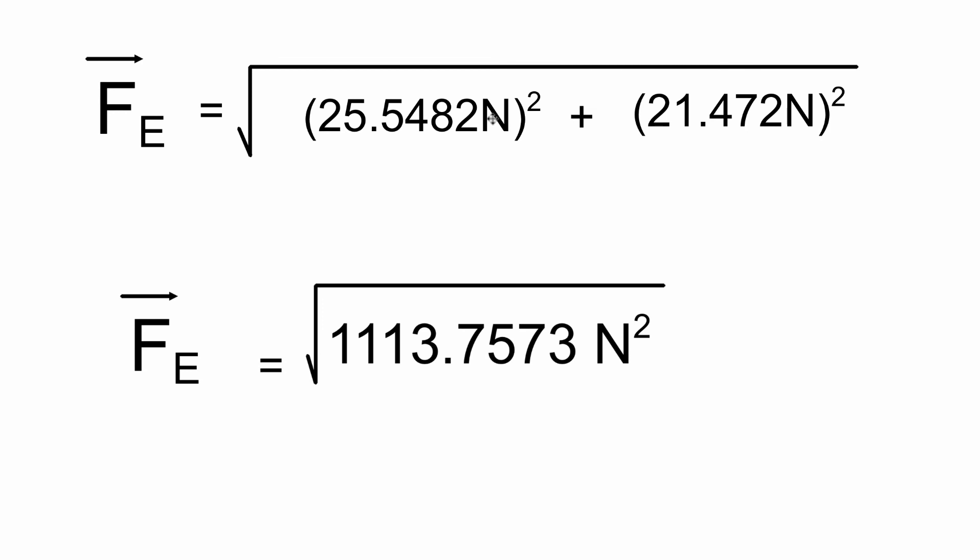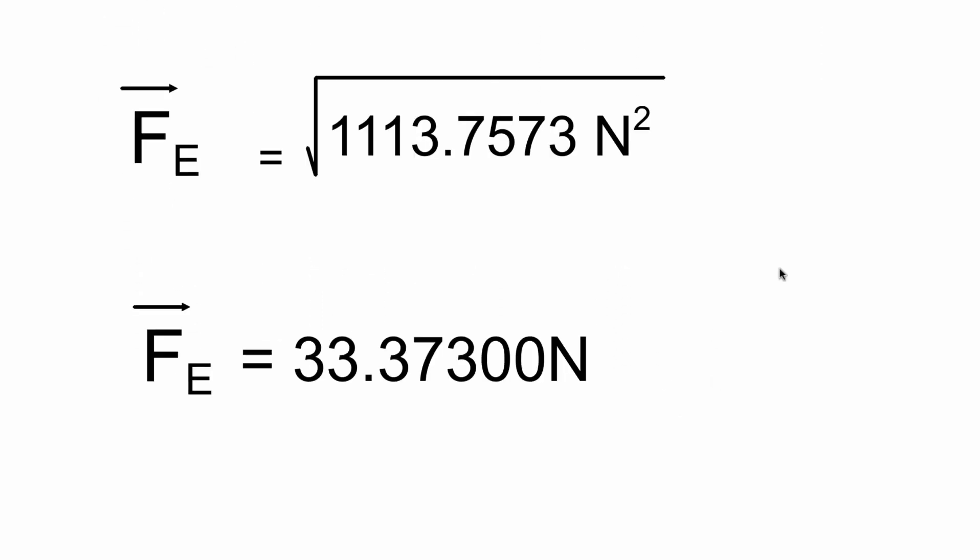That gives us the square root of 1113.7573, and this would be newton squared plus newton squared. Take the square root, we get 33.3700 newtons.